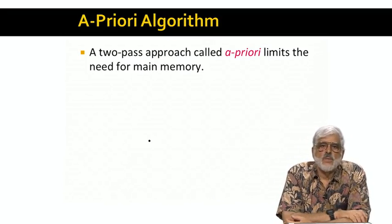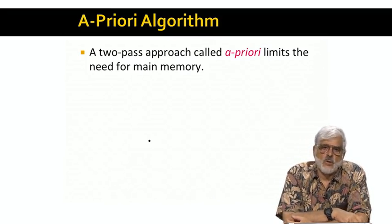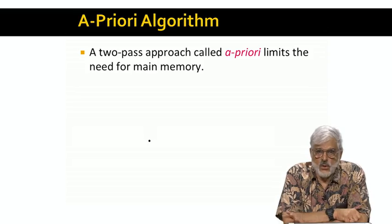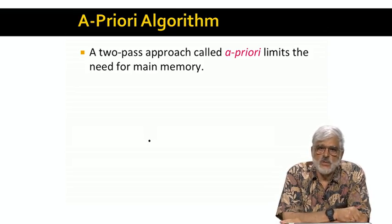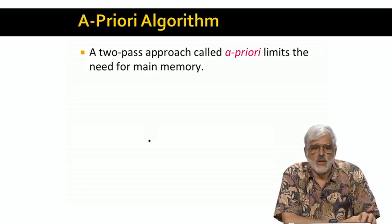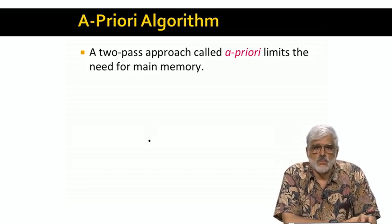We can think of the a priori algorithm as a two-pass algorithm, since that is what it needs to find frequent pairs. But if you want to go past pairs to larger item sets, then you need k passes to find frequent item sets of size up to k.